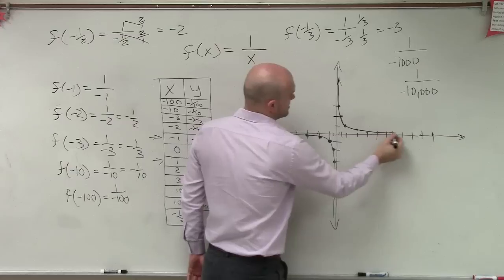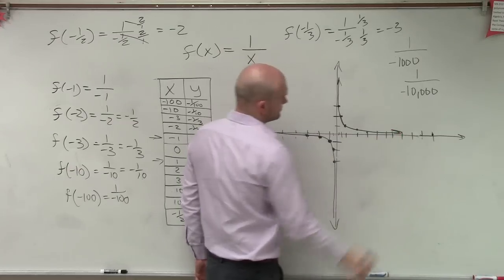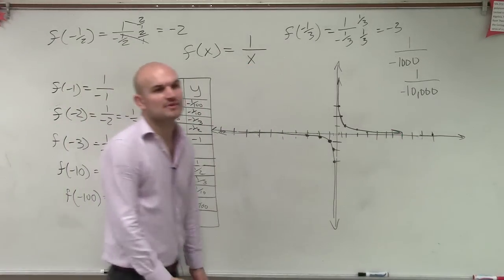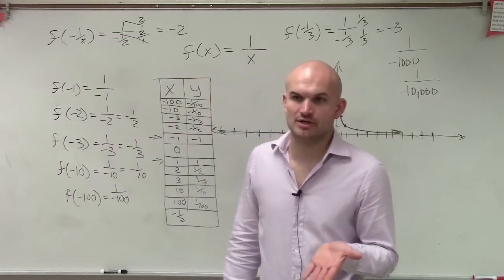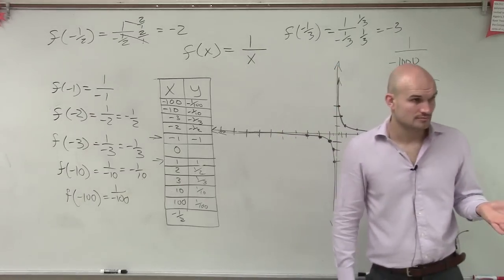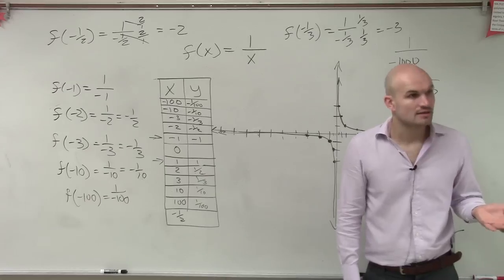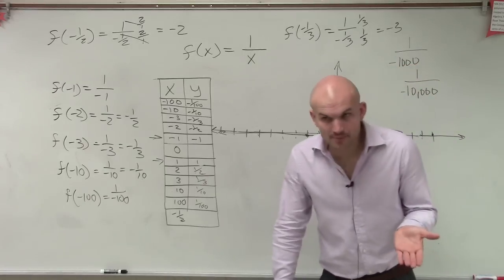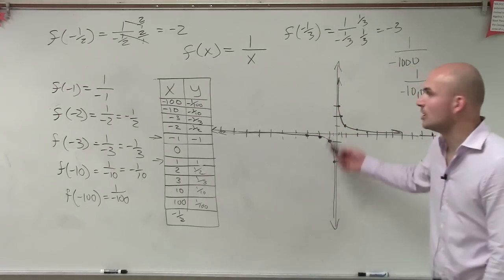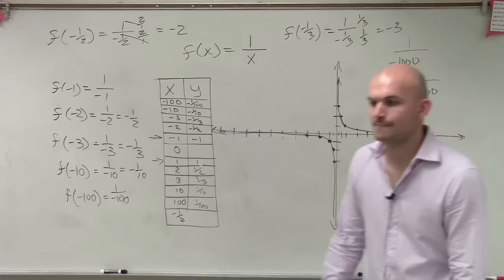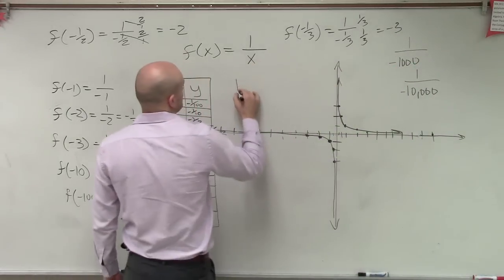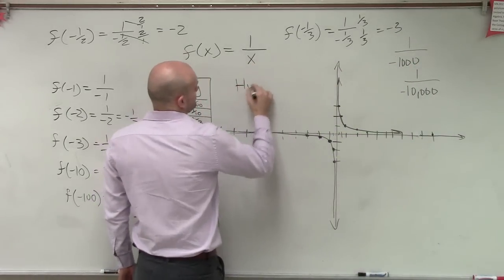If we do positive 1 half that equals 2, and positive 1 third equals 3. This graph is going to look something like this. You remember quadratics — we call the shape of that graph a parabola. The shape of the reciprocal graph is what we call a hyperbola.